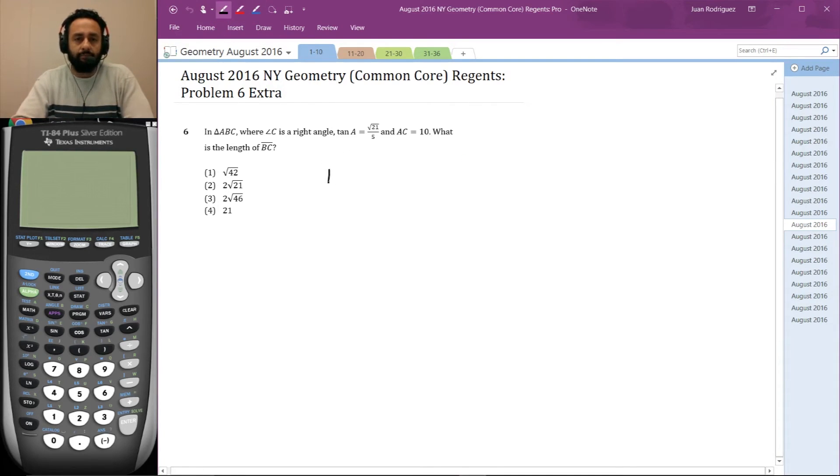Here's my diagram. I know the right angle is angle C, so I'm drawing a right triangle not necessarily to scale. This is C, this is A, this is B. Tan A equals opposite over adjacent equals √21/5.